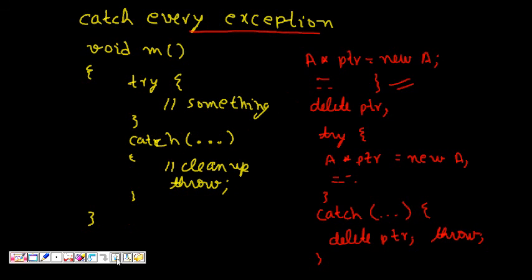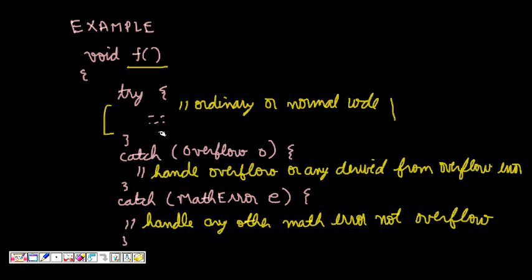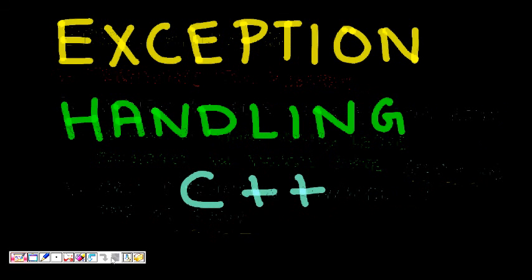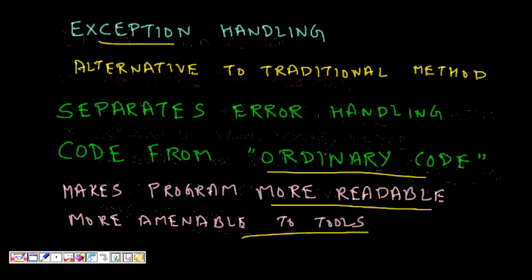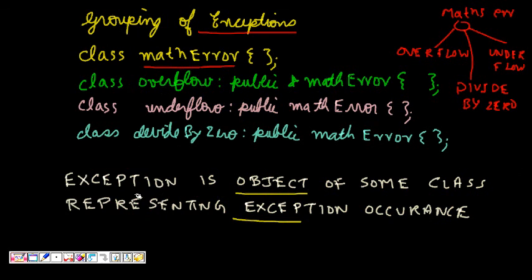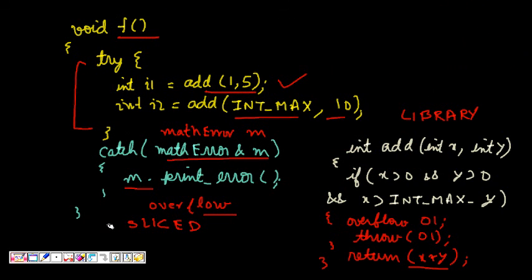So that's all about exception handling in C++. It's very important when writing industry-level code — you need to handle all kinds of exceptions to be a good coder. It's not just about writing correct logic; you also have to handle all the errors properly, and that's what exception handling in C++ provides. I hope you liked this video — please subscribe to my YouTube channel and share it.